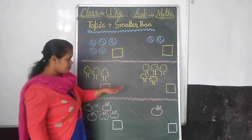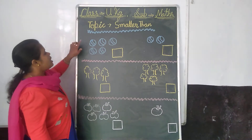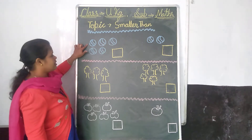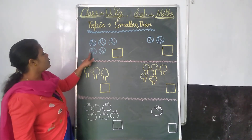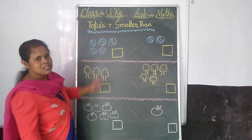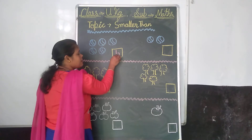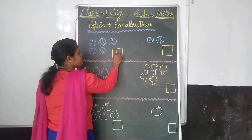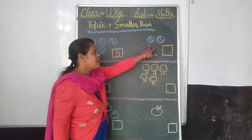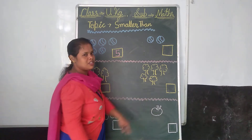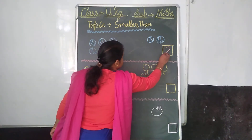Children, look at the picture and count with me. How many balls are here? 1, 2, 3, 4, 5. How many balls are here? 5 balls. I will write the number 5. Now how many balls are here? 1, 2. How many balls are here? 2. So I will write number 2.